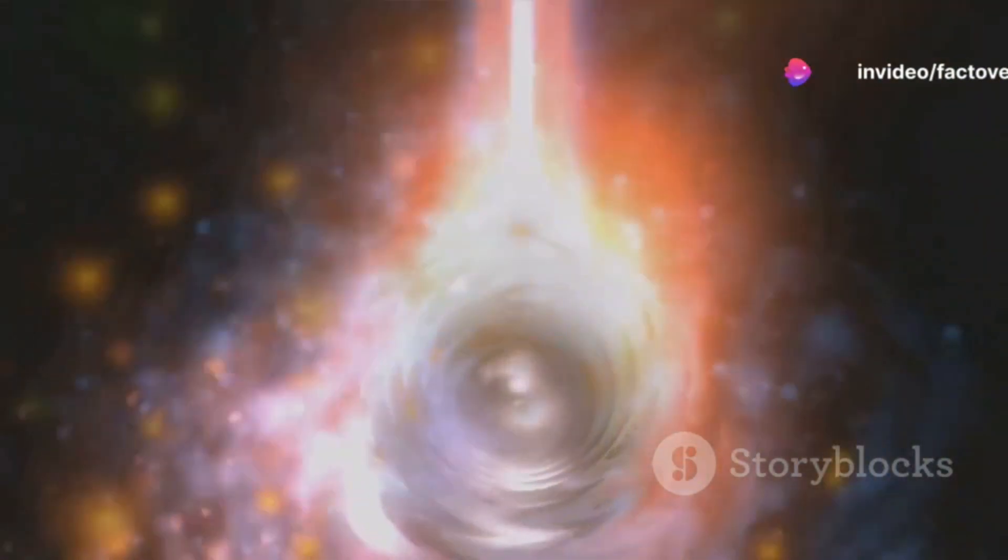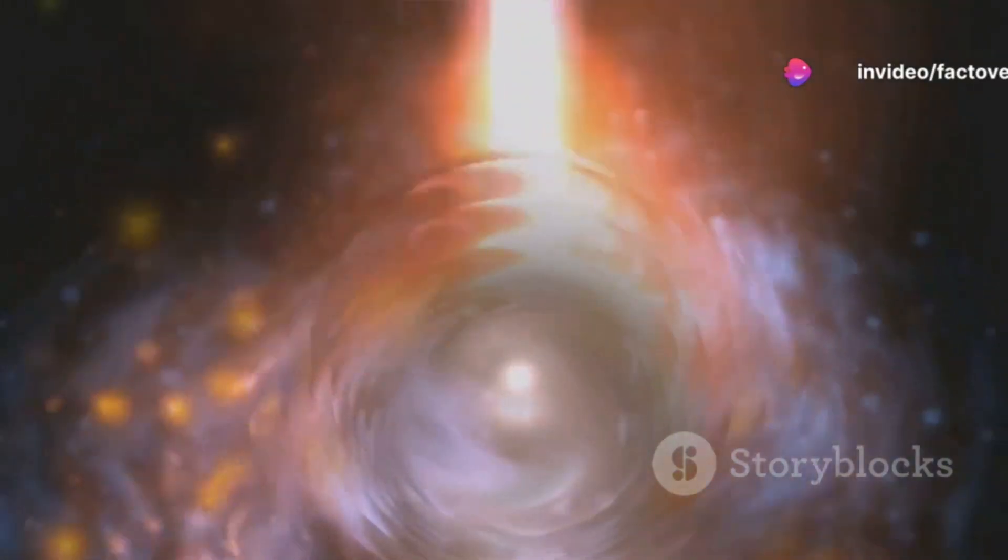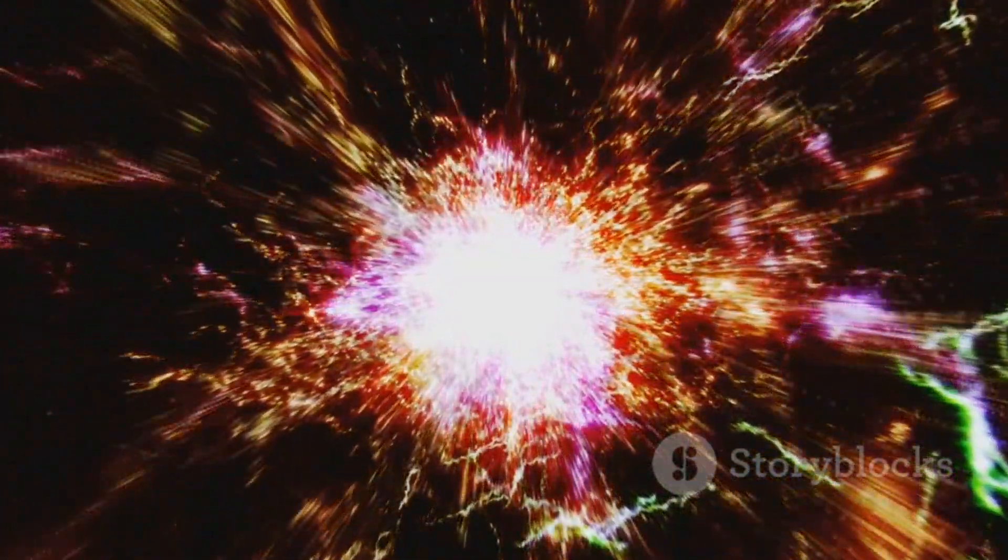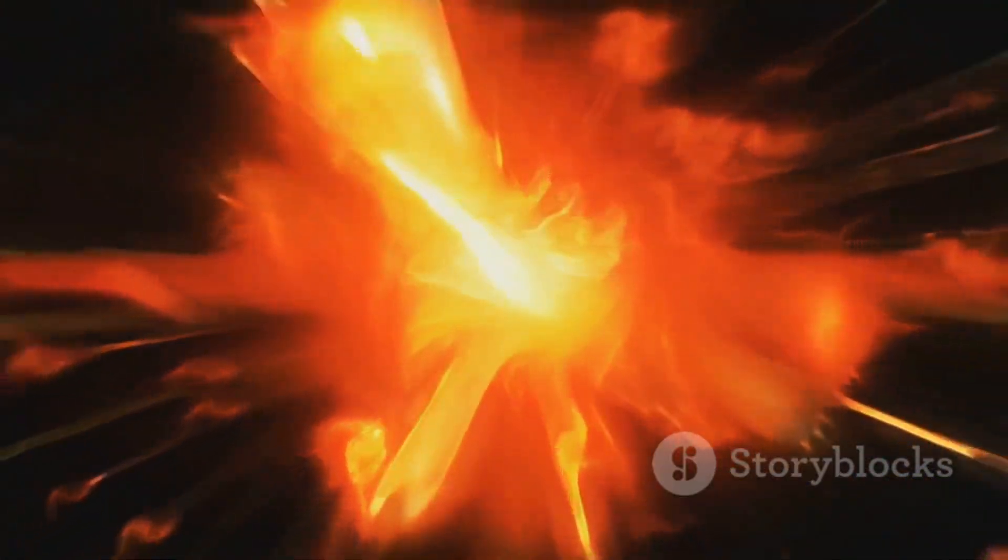This afterglow radiation arises from the interaction of the GRB jets with the surrounding interstellar medium. As the jets slam into gas and dust, they heat the material, causing it to glow at various wavelengths, from x-rays to radio waves. By studying the evolution of this afterglow, we can learn more about the energy output of the burst, the composition of the surrounding environment, and the physics governing the expansion of the jets.